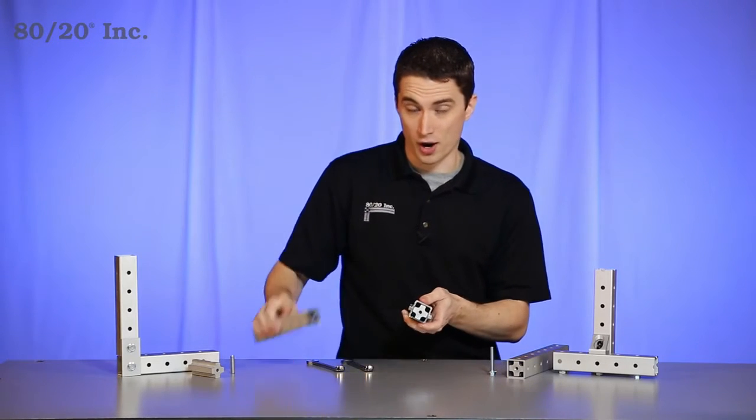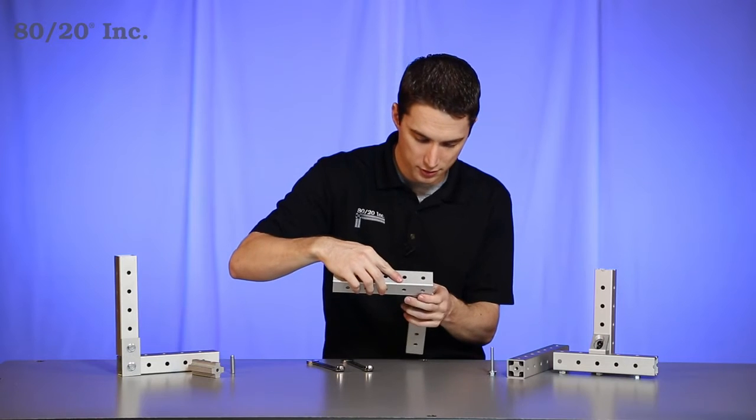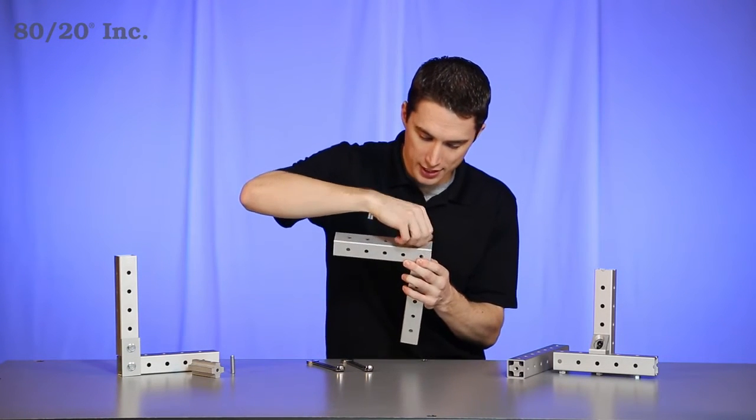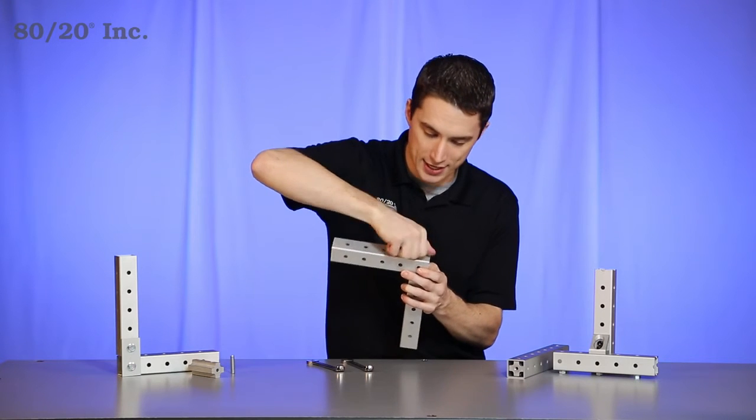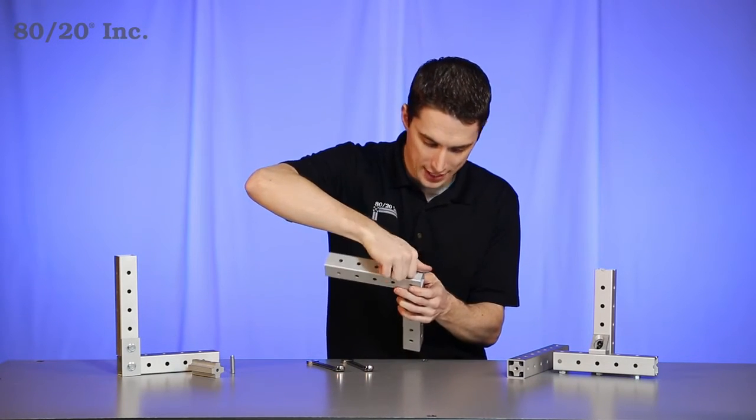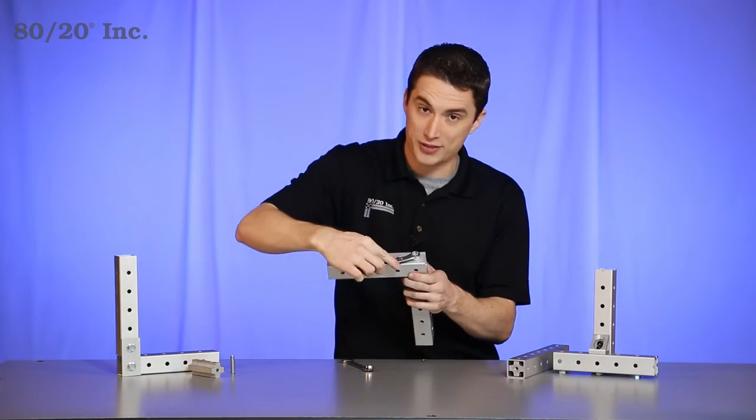From there we're ready for our other bar where we're going to line up our pre-drilled hole over the end of the tube insert. We'll take our bolt, slide it in there and start hand tightening it down. Now once you have that hand tightened down, grab your wrench again and finish it off tightening it secure.